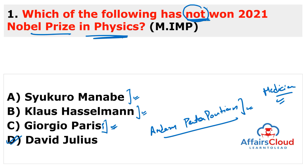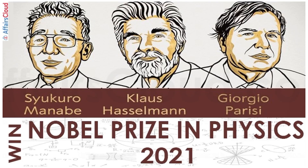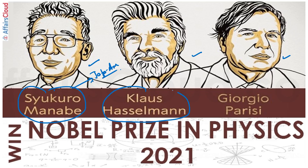If the examiner asks about Physics, the winners are Syukuro Manabe, Klaus Hasselmann, and Giorgio Parisi. You can see their cover page — very important personalities. Syukuro Manabe is a Japanese-American scientist. Klaus Hasselmann belongs to Germany, and Giorgio Parisi belongs to Italy.